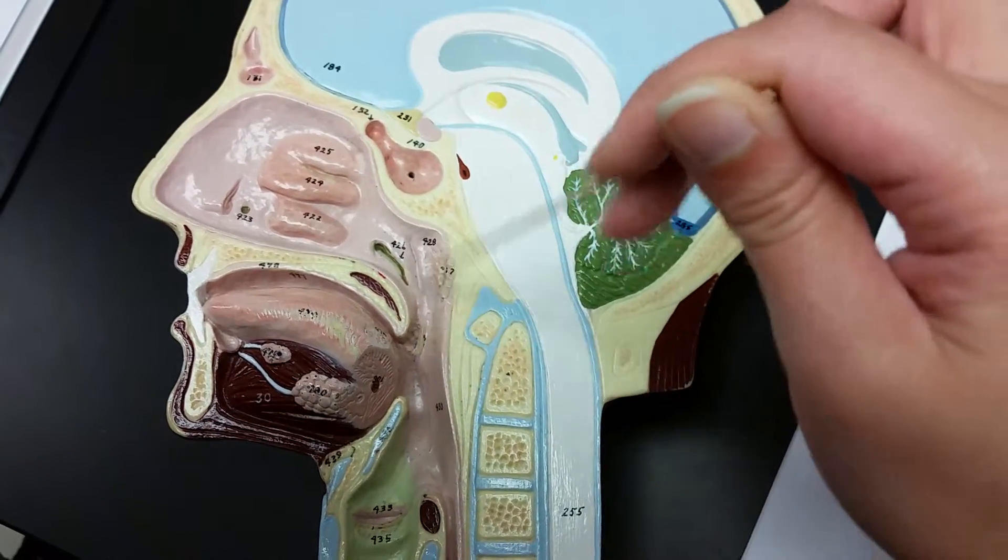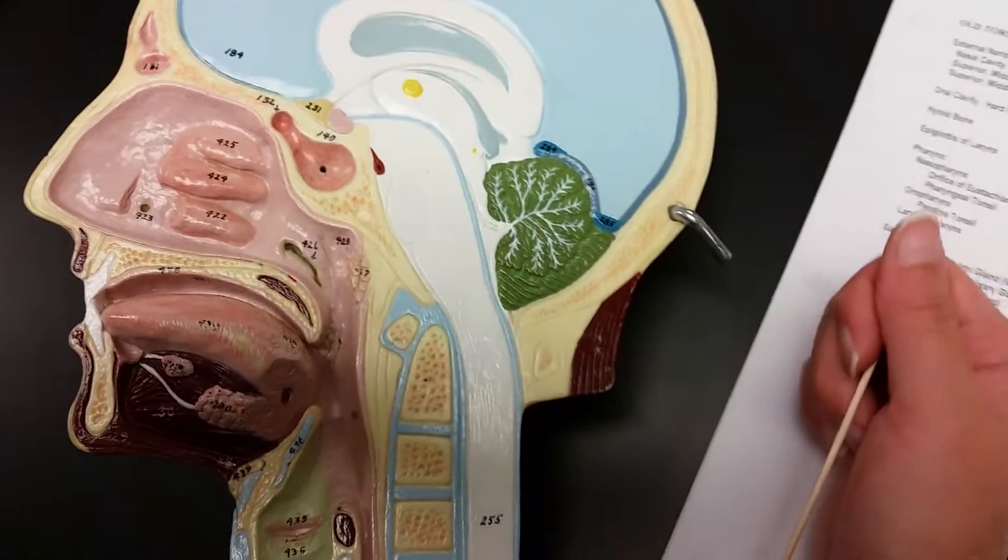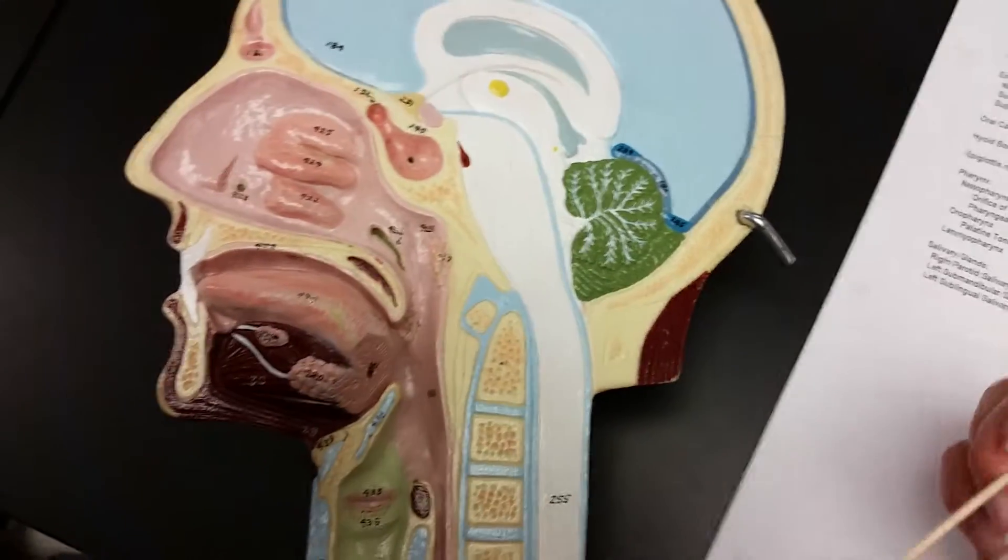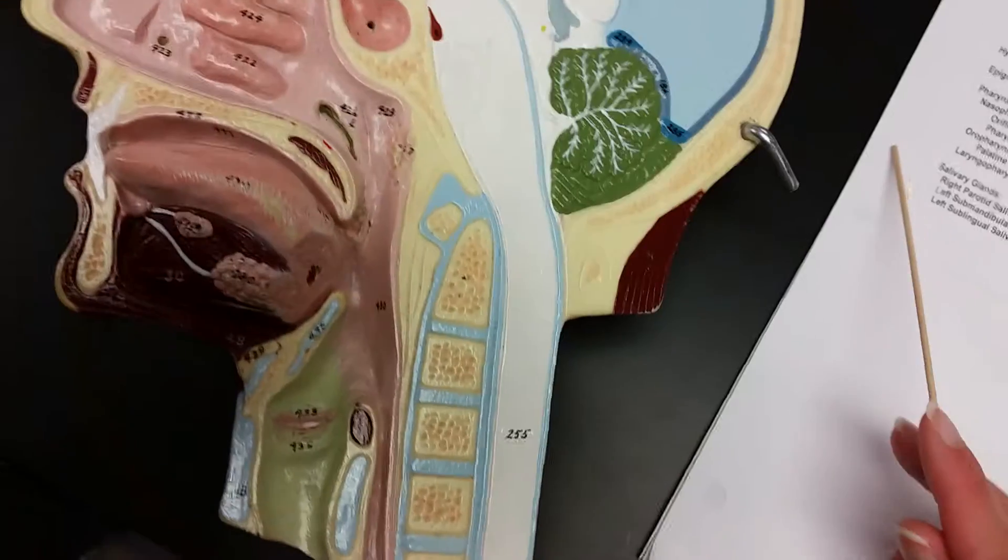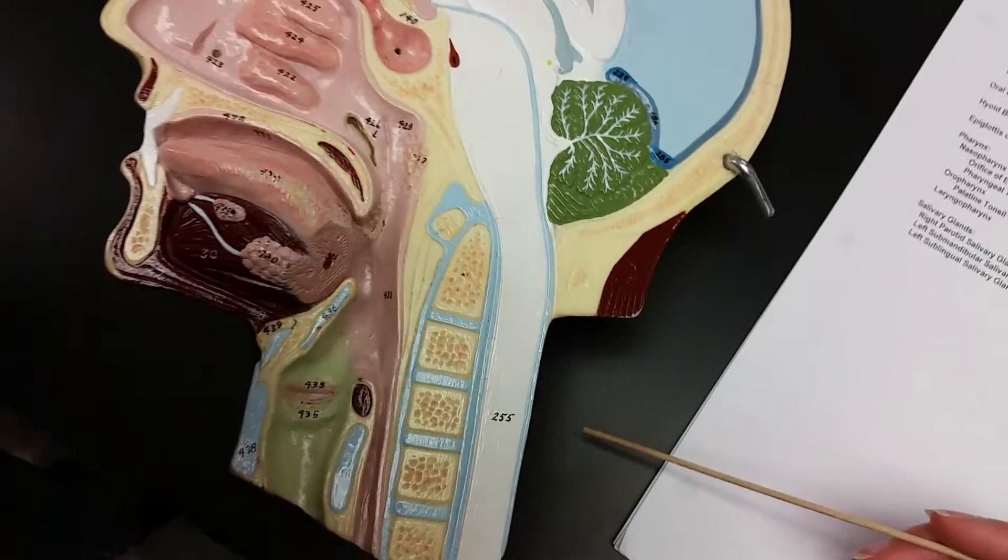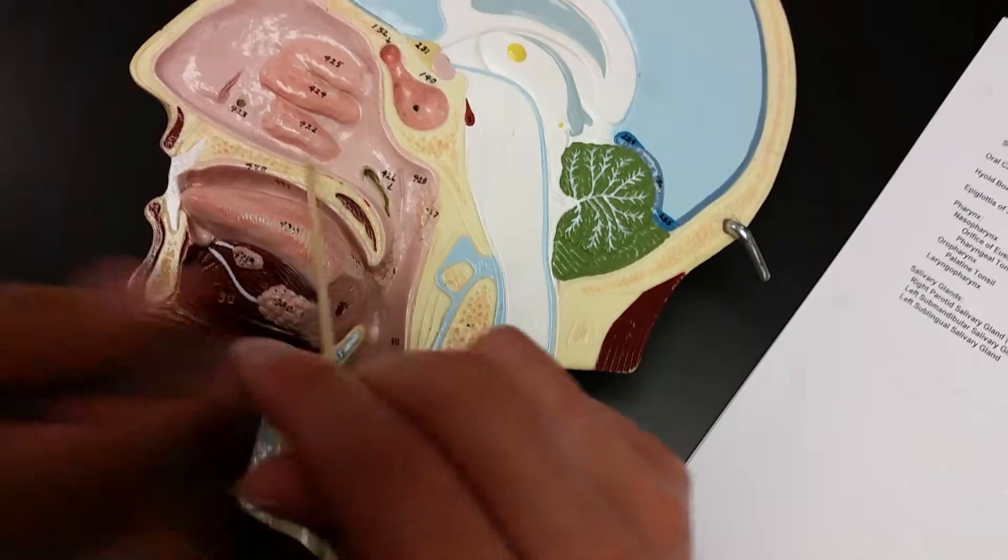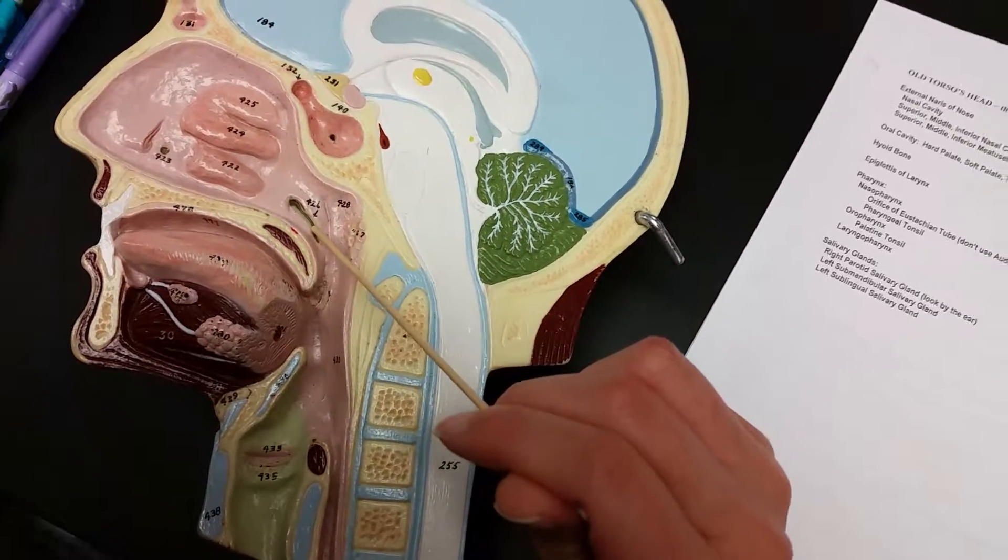This is the nasopharynx. This is the orifice of Eustachian tube. How about the orifice of Eustachian tube? There you go. That's right. Which is this orifice of Eustachian tube.